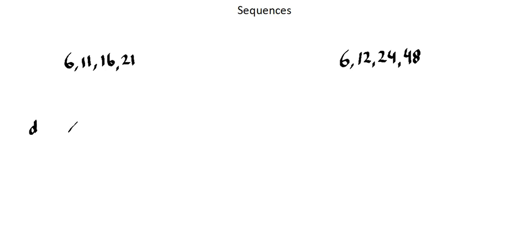11 minus 6 is 5. 16 minus 11 is 5. And 21 minus 16 is 5. So this is a first difference arithmetic sequence. And the difference we have calculated is 5.